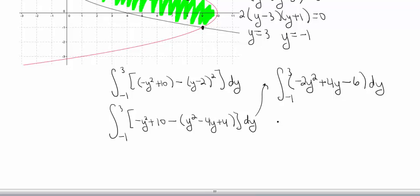So we're going to end up with negative two-thirds y cubed plus 2y squared minus 6y. And again, you can always go through and take the derivative to check it, just to make sure you've got the right function in there. I'd hate to do all this work and then have the wrong function.